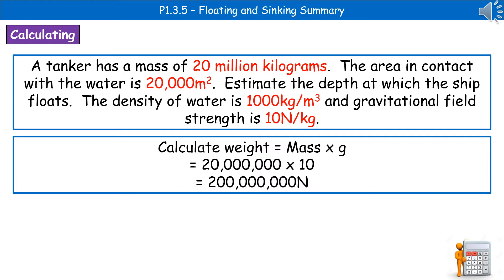We know that the mass is 20 million kilograms. We know gravitational field strength is 10. So, 20 million times 10 gives us 200 million newtons as our force of weight.